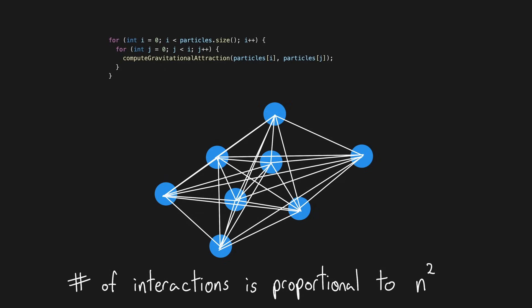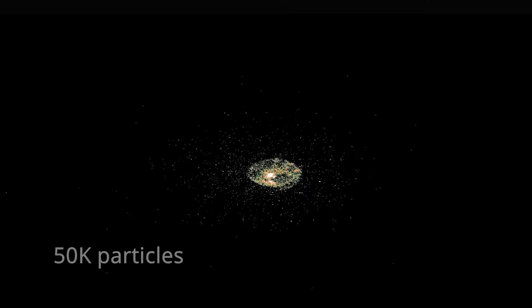meaning the number of particle interactions to compute is proportional to the number of particles in the simulation squared. So this may work well for simulations with a few hundred, or perhaps even a thousand particles. But what if we want much, much more?